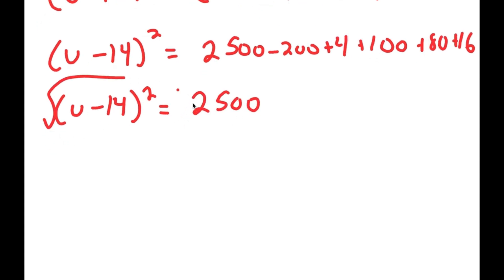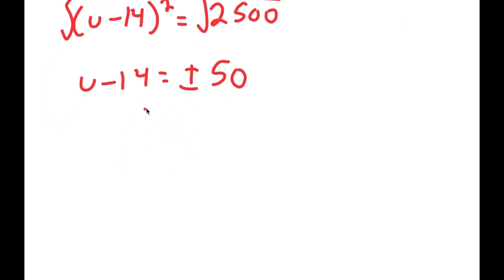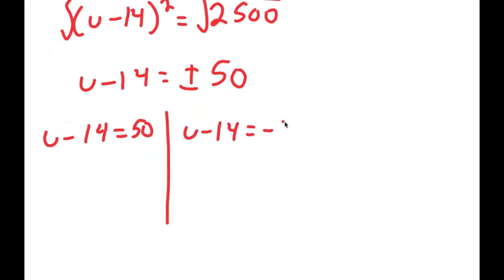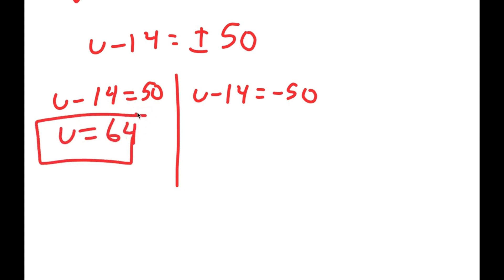Taking the square root on both sides gives u minus 14 equals positive or negative 50. So we get two equations: u minus 14 equals positive 50, giving u equals 64; and u minus 14 equals negative 50, giving u equals negative 36.